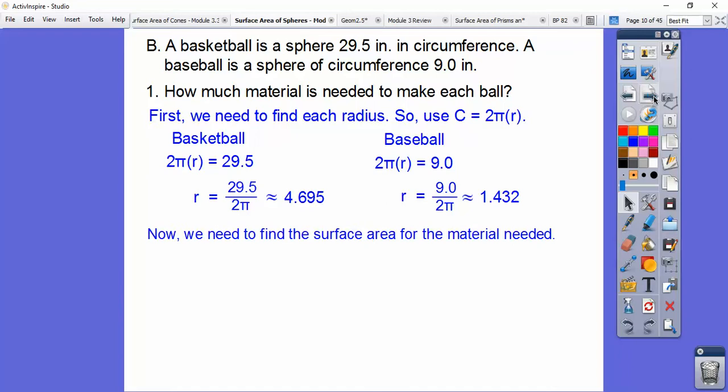Now let's find the surface area of both. So now we're going to use 4πr². Just make sure that you square it first, and then multiply it by 4, and then times 3.14. Same here. Square this number first.